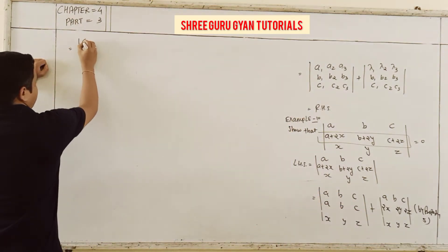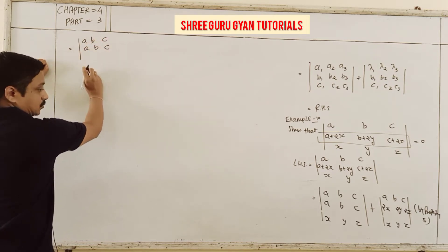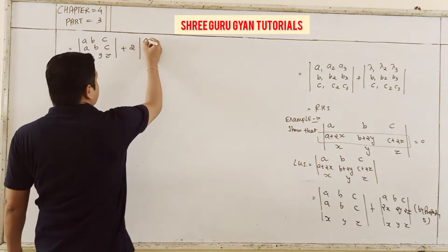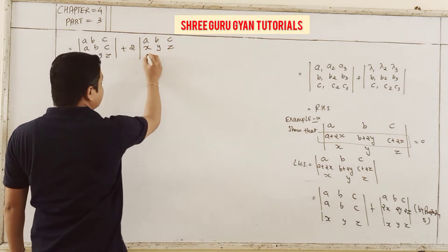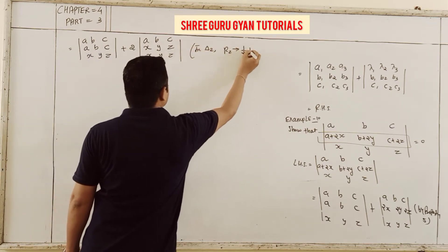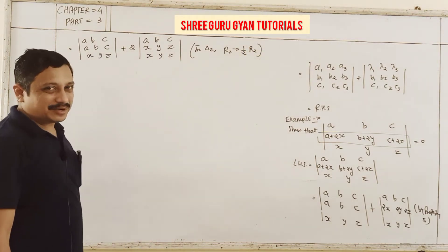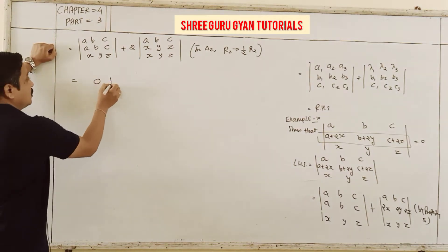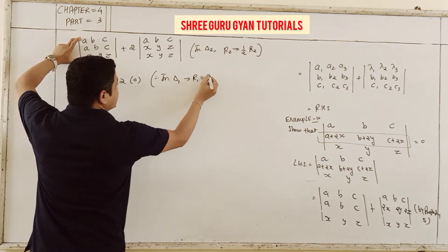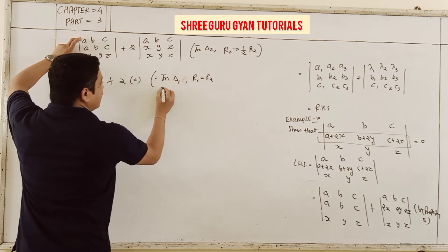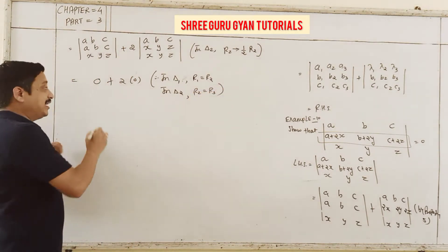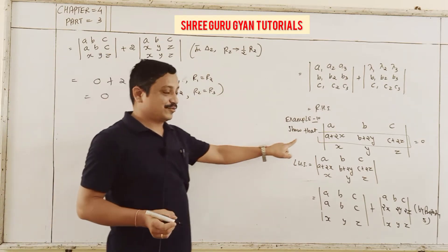So here both determinants are 0. Del1 is 0 because first row and second row are equal. Del2, after taking 2 common, also has second row equal to third row, giving 0. The total answer is 0. That's the final proof.